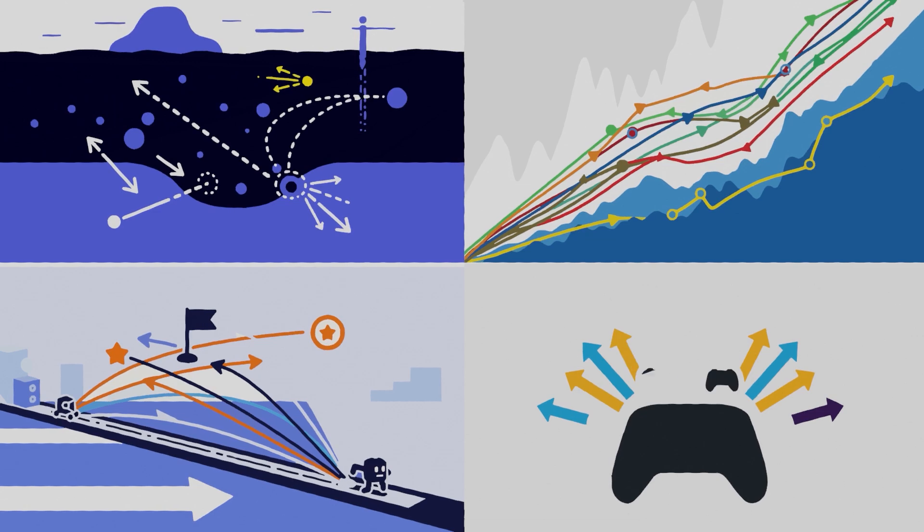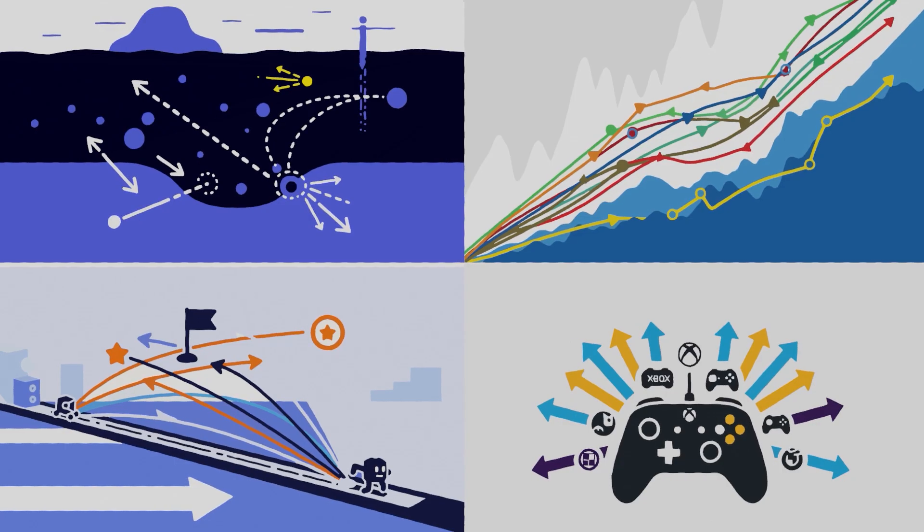Even real-time games use Monte Carlo-inspired techniques to fake global illumination on the fly. It's one idea, but it keeps showing up in places where the world is too messy to compute exactly.